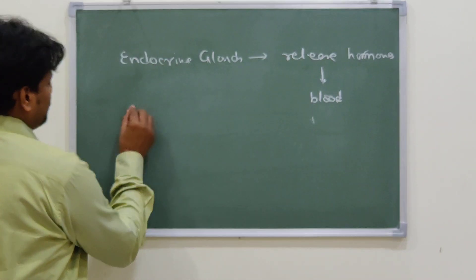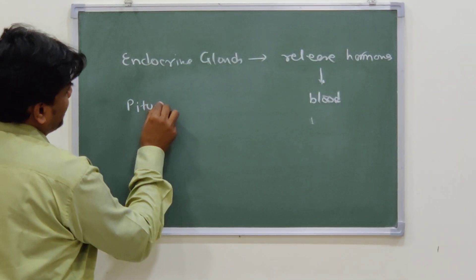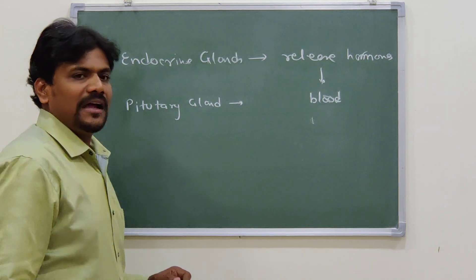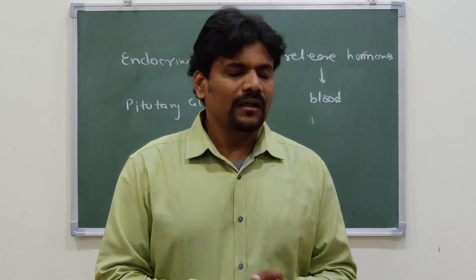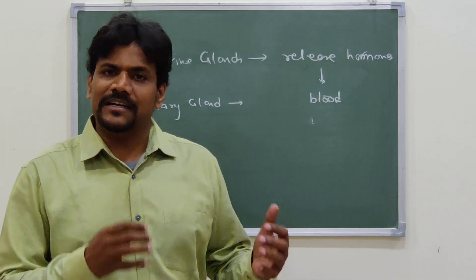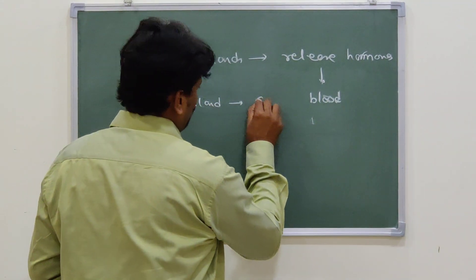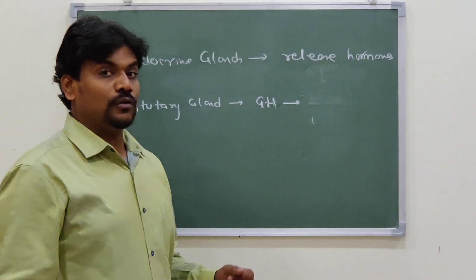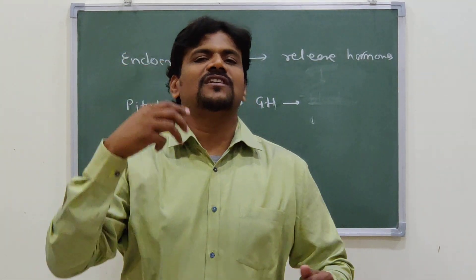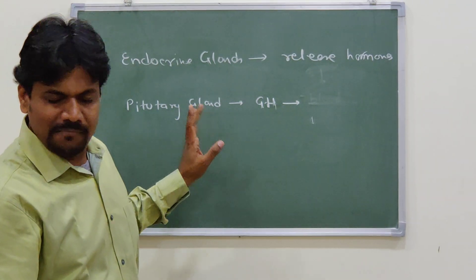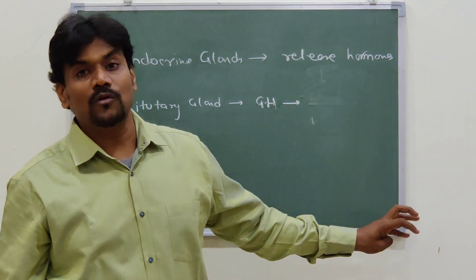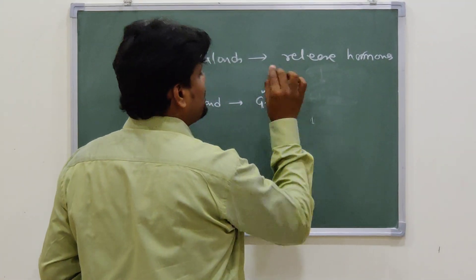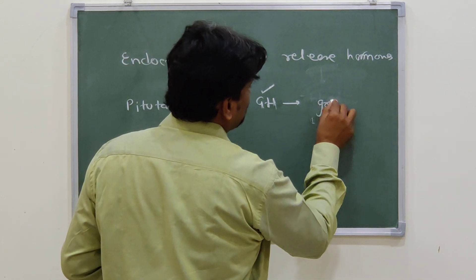The first gland is the pituitary gland, also called the master gland. It not only produces its own hormone — the growth hormone (GH) — but it also stimulates other glands to perform their functions when required. That is why it is called the master gland. The growth hormone, as the name suggests, is responsible for the growth and development of the body.